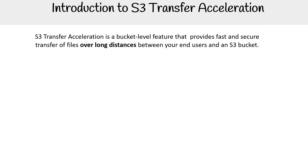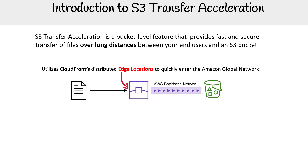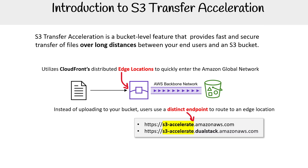S3 Transfer Acceleration is a bucket-level feature that provides fast and secure transfer of files over long distances between your end users and your bucket. It works by utilizing CloudFront's edge locations to quickly enter the Amazon global network. Instead of uploading directly to the standard endpoint, we use a distinct endpoint — the S3 accelerate endpoint — and there's a dual-stack version that supports both IPv4 and IPv6.